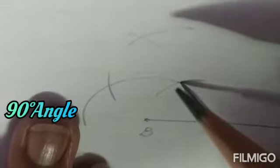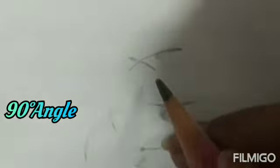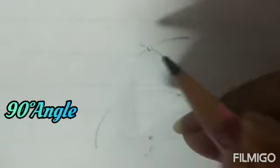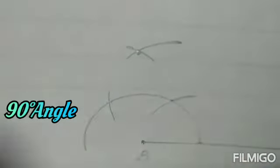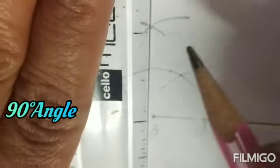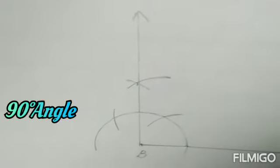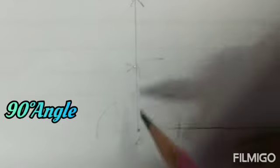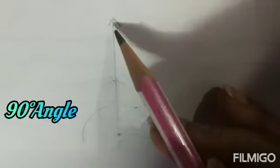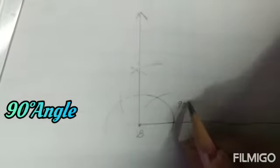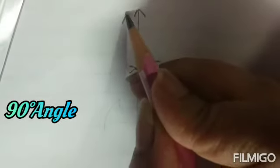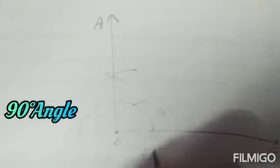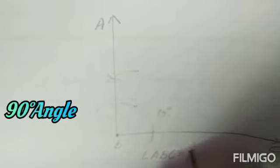Keep the compass at the 60 degree point and make the arc, then keep it at the 120 degree point and cut the arc. Where the two arcs intersect, make a prominent dot. Then take your scale and join both points together. This gives a 90 degree angle, named angle ABC equals 90 degrees.